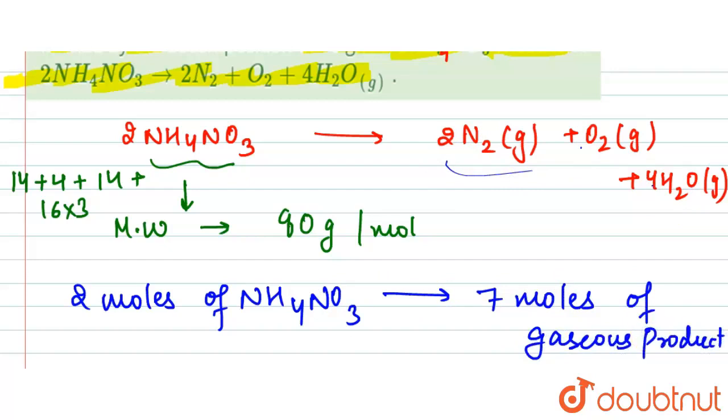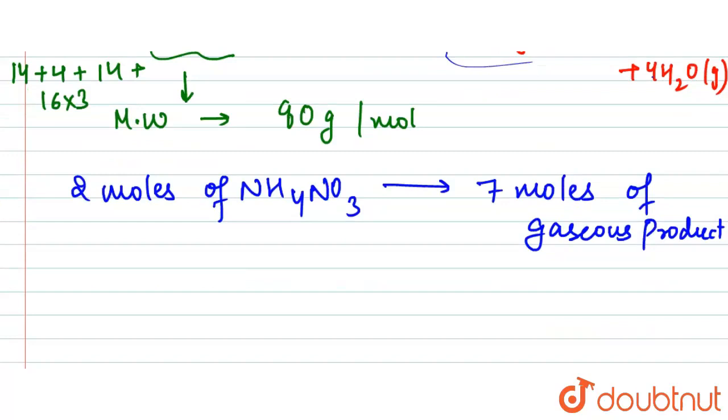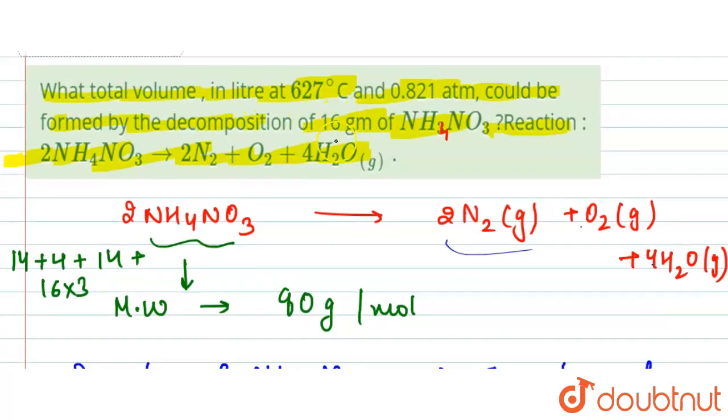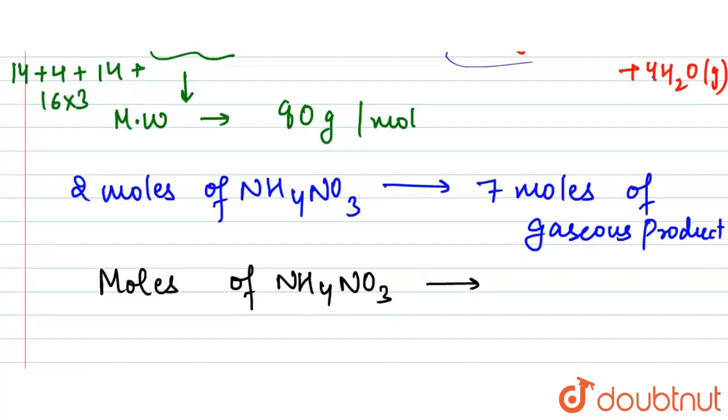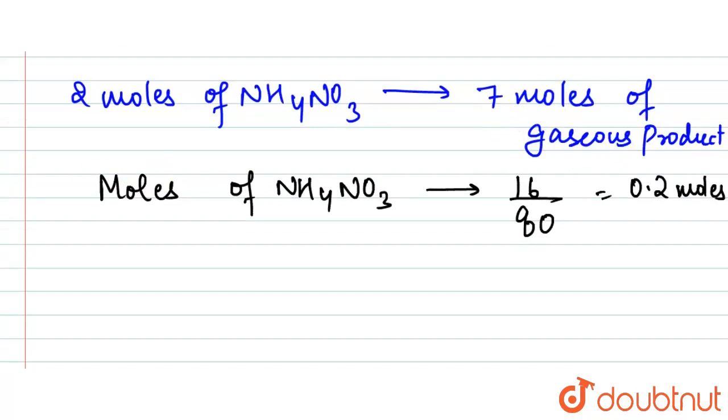If we find out the moles of NH4NO3 for the 16 grams, it will be 16 upon 80, given weight upon molecular weight, that is 0.2 moles. So if 2 moles are giving us 7 moles, then 1 mole will give us...